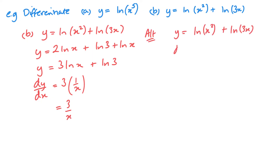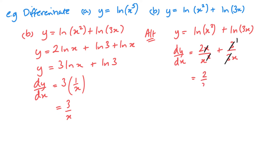The alternative method is to differentiate straight away. The differential of x² over x² is 2x/x², and the differential of 3x over 3x is 3/3x. Simplifying: 2x/x² = 2/x and 3/(3x) = 1/x, so we get 2/x + 1/x = 3/x. You have more than one way of solving these — using rules of logs first then differentiating, or using this alternative direct differentiation.